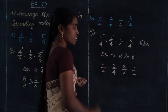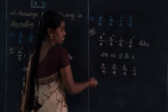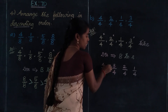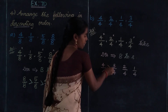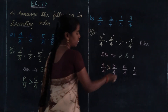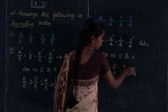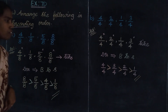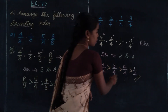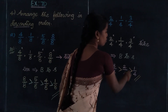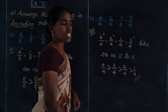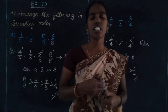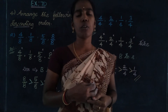So using this side, 4 by 4, 3 by 4 — which one is the greatest? This is the greatest one. The descending order is: 4 by 4, 3 by 4, 2 by 4, 1 by 4. It's the descending order — the biggest value to smallest value is the final order. Thank you students.